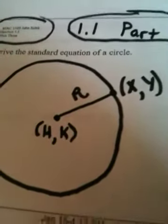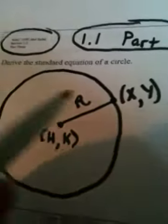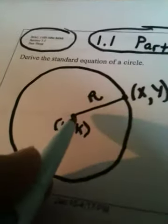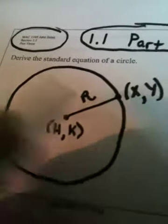Okay? So I want you to know the players. H,k is the center of the circle. R is the length of the radius. And (x,y) is a point on my circle. Now, I hope you agree with this. The distance from the center to here is equal to the radius.